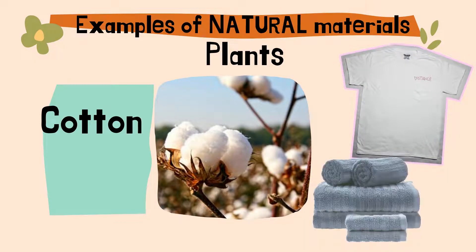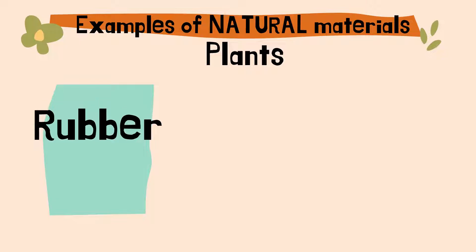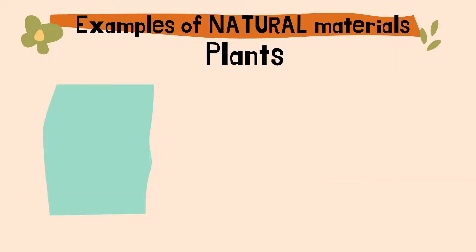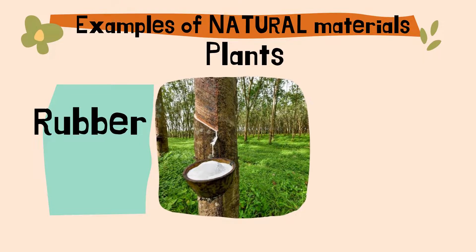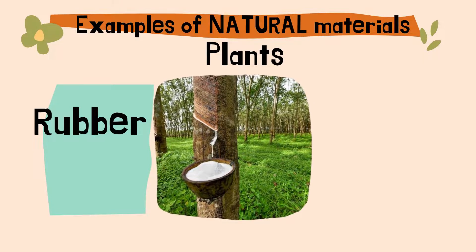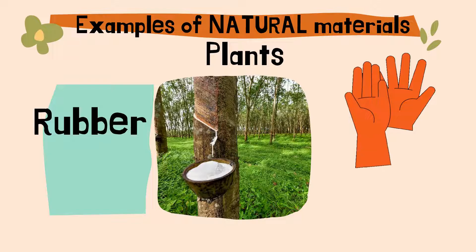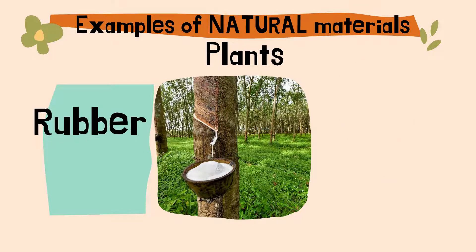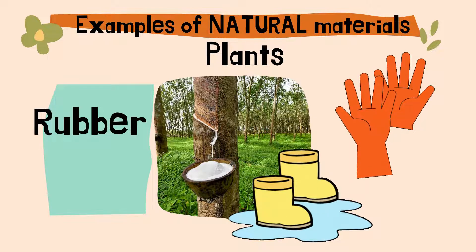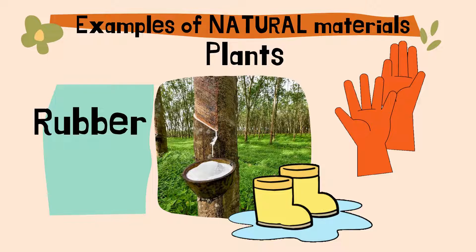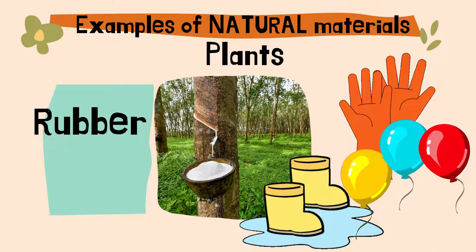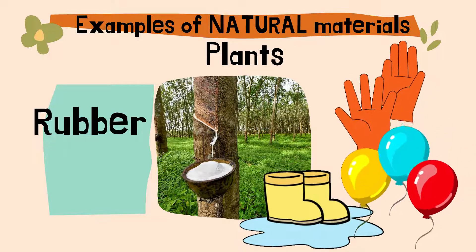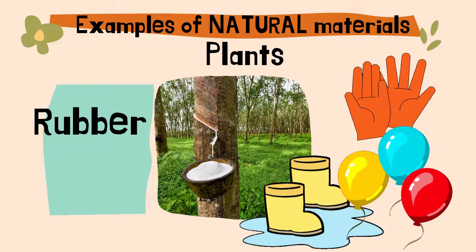The second material that comes from plants is rubber. Rubber comes from a rubber tree. It is used to make, for example, rubber gloves, rain boots, balloons, erasers, and many other things.